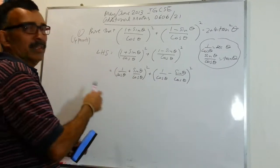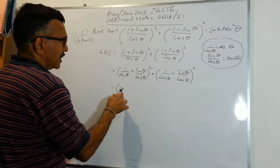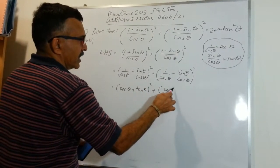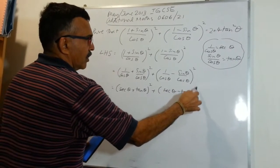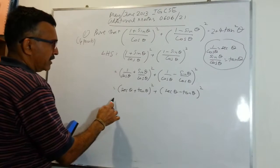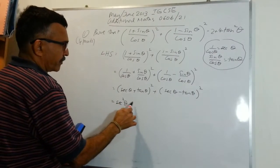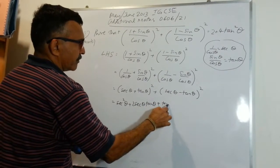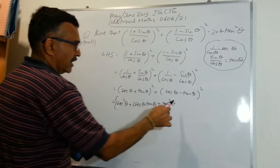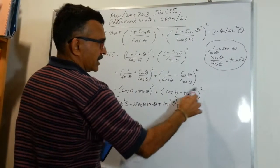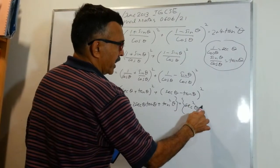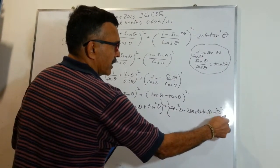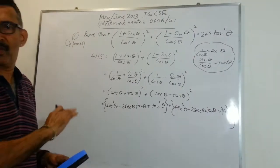Just rewriting what's in the brackets. Now let's expand. We have sec²θ + 2secθ·tanθ + tan²θ from the first bracket, plus sec²θ − 2secθ·tanθ + tan²θ from the second bracket.